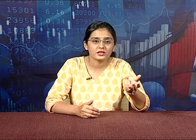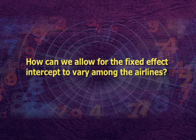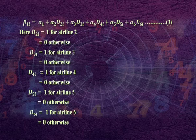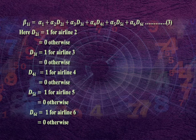It is called fixed effect in the sense that the intercept term is not dependent upon time — thus the fixed effect model is time invariant. Similarly, the slope coefficients do not vary across individuals or over time. The next question is how to allow the fixed effect intercept to vary among airlines. This is accomplished using the dummy variable technique. We write: β₁ᵢ = α₁ + α₂d₂ᵢ + α₃d₃ᵢ + α₄d₄ᵢ + α₅d₅ᵢ + α₆d₆ᵢ — equation number 3.